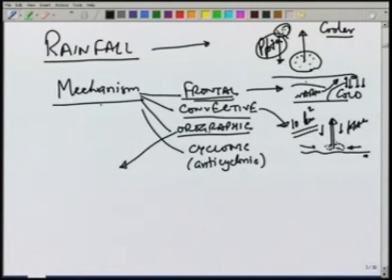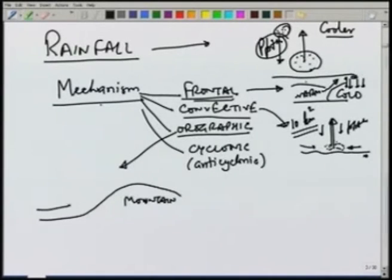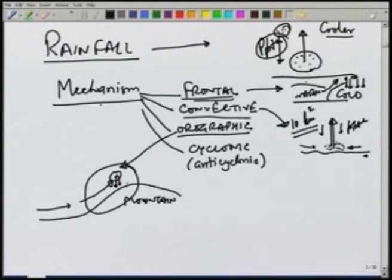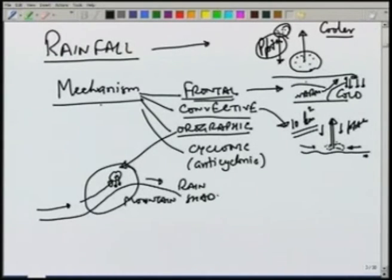Orographic — in this type, the lifting agency is mountains. If the ground surface has a mountain here, air coming in will get lifted because of the presence of the mountains, and as it gets lifted it will have condensation and precipitation. Typically, precipitation is more on the side facing the wind. On the other side, precipitation will be small because the water vapour has already been removed. This is known as rain shadow.